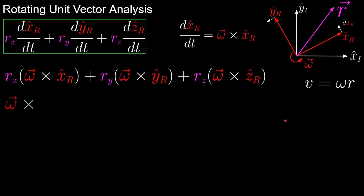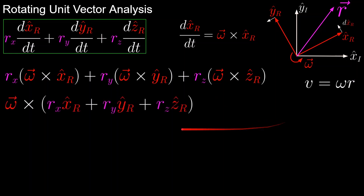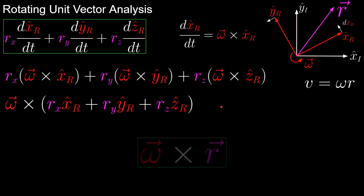Now we're going to factor out the omega cross term from this expression, and what we have left inside the parentheses should look familiar, since it's simply the position vector in the rotating reference frame coordinates. This takes us to our generalized form of the derivatives of the unit vectors, which is omega cross r.